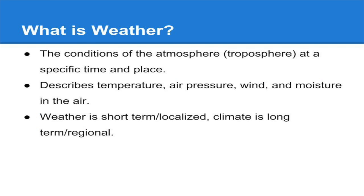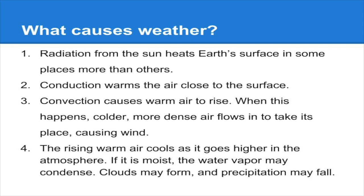So when it comes down to it, what really is weather? Well, it's what's happening with temperature, air pressure, wind, and moisture in the air at a specific time and place on Earth. If it weren't for Earth receiving energy from the Sun, we really wouldn't have weather here on planet Earth. It's all about how we receive that Sun energy and how it's moved around, changed, shifted, and transferred from one place to another.